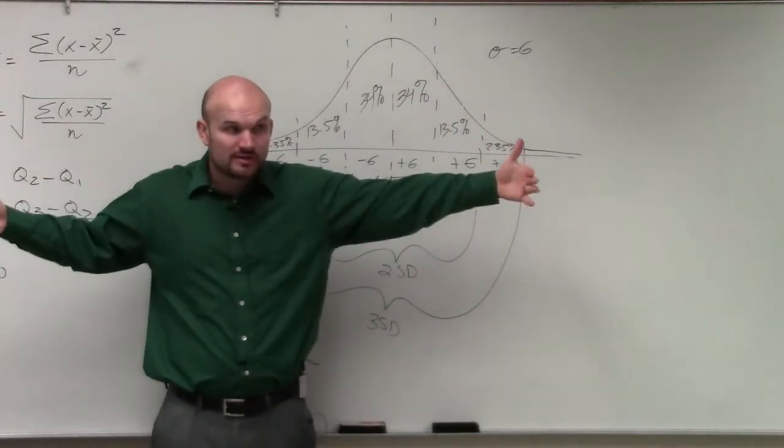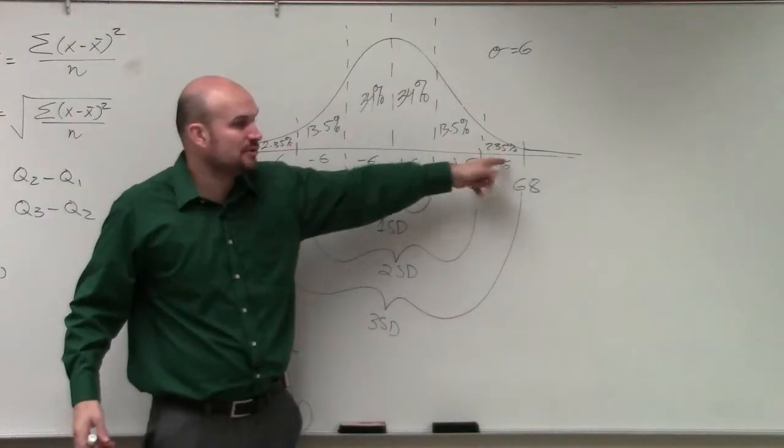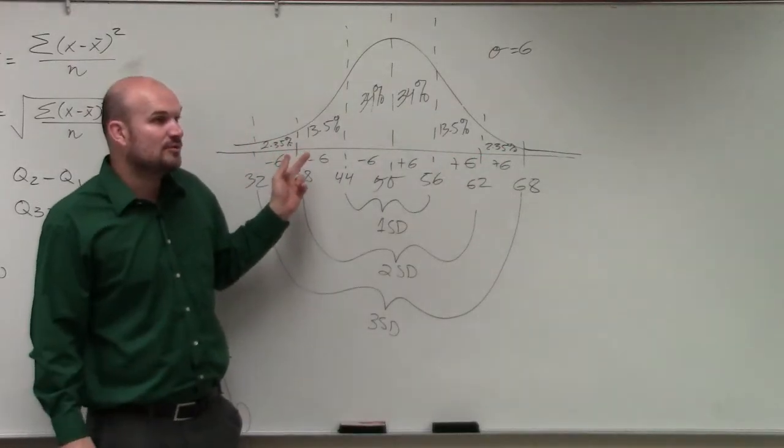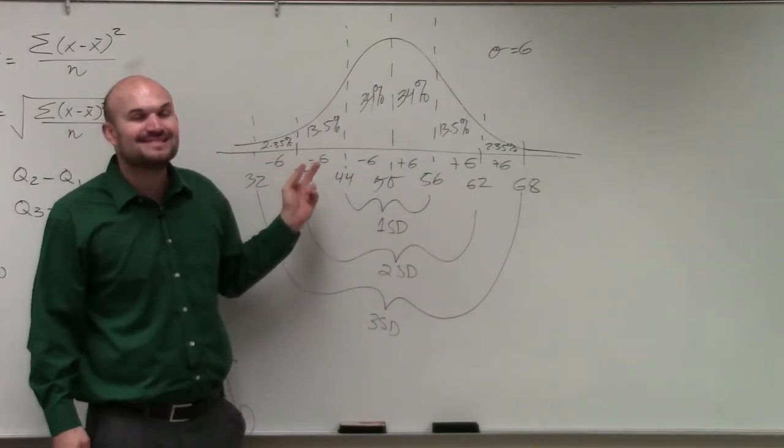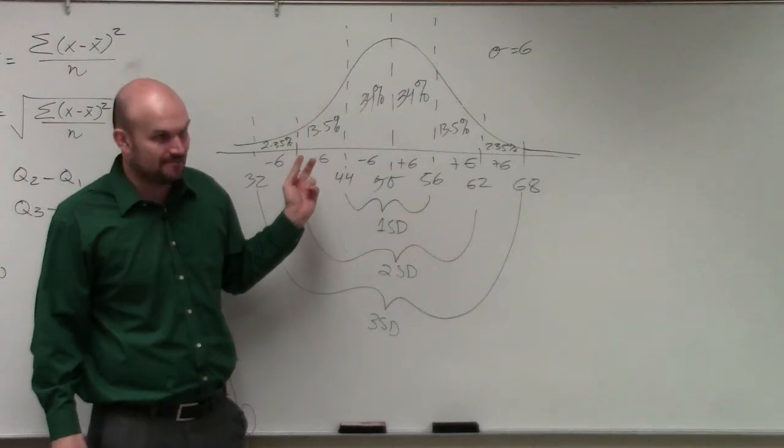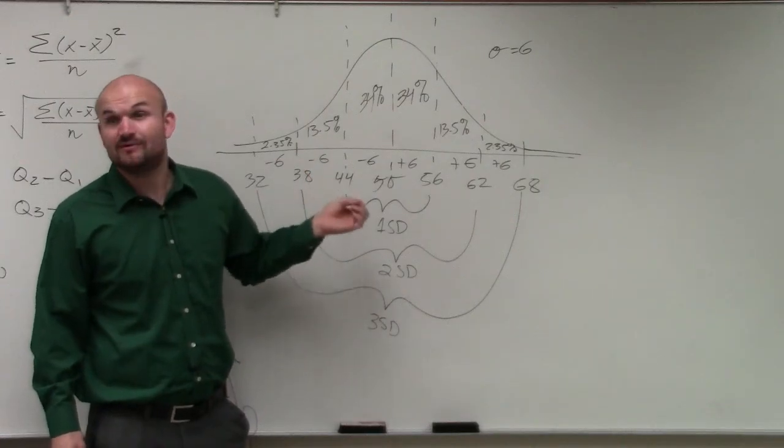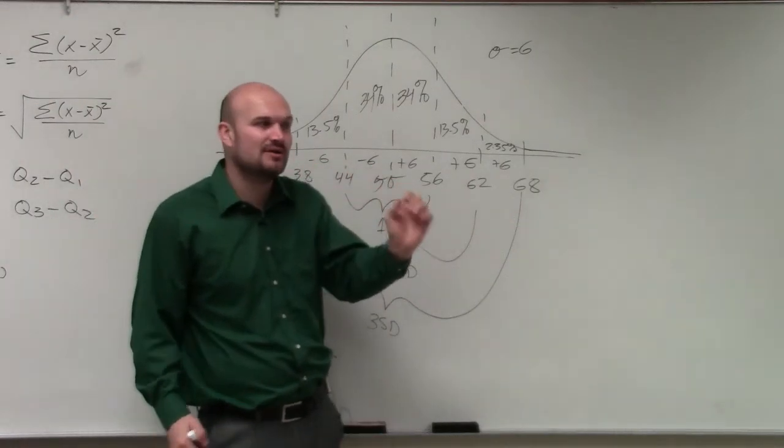If we go out to our third deviation, we add 2.35 plus 2.35, which is going to be 99.7% of our data. That's a lot of the data, right? That's only 0.3 we don't have accounted for.